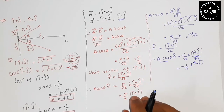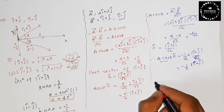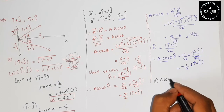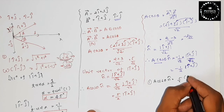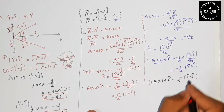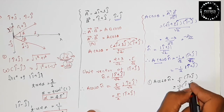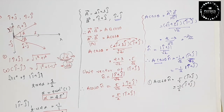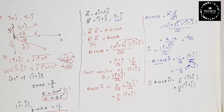So here we got both final answers. First answer: a·cos(θ)·n-cap = 5/2 · (i+j-cap). Second answer: -1/2 · (i+j). These are your final answers. I hope you got this. For any doubts, comment in the comment section. If you want to buy a book, check the description. Take care and bye.